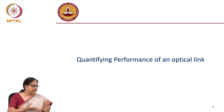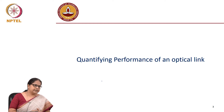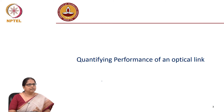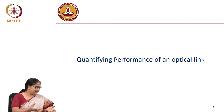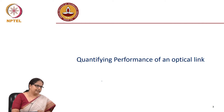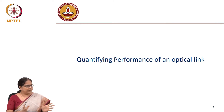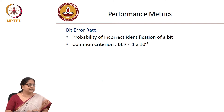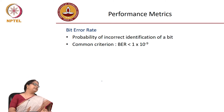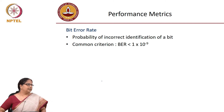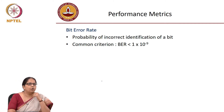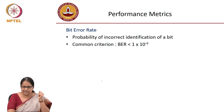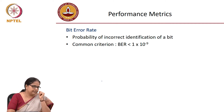I transmit a certain number of bits, the receiver receives a certain number of bits. When do you say that the transmission or the communication is successful? When the receiver receives the same bits as I intended to transmit and there should not be any error. So the first performance metric of a communication link is bit error rate. Bit error rate is what quantifies how this link is working — is it good, is it a bad link? Bit error rate is the probability of incorrect identification.